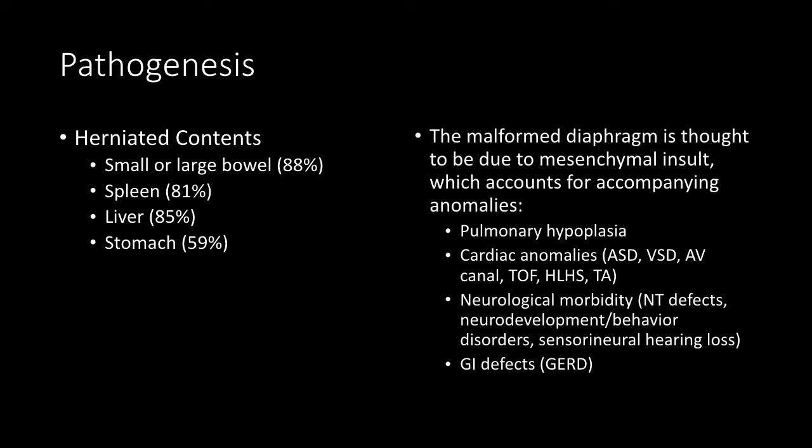The underlying process is thought to be a mesenchymal insult occurring sometime in the prenatal period. This accounts for the other anomalies, such as pulmonary hypoplasia, congenital heart defects, neural tube defects, and various GI defects as well. You can imagine that if those structures are involved with the hernia, there will be some residual anomalies.